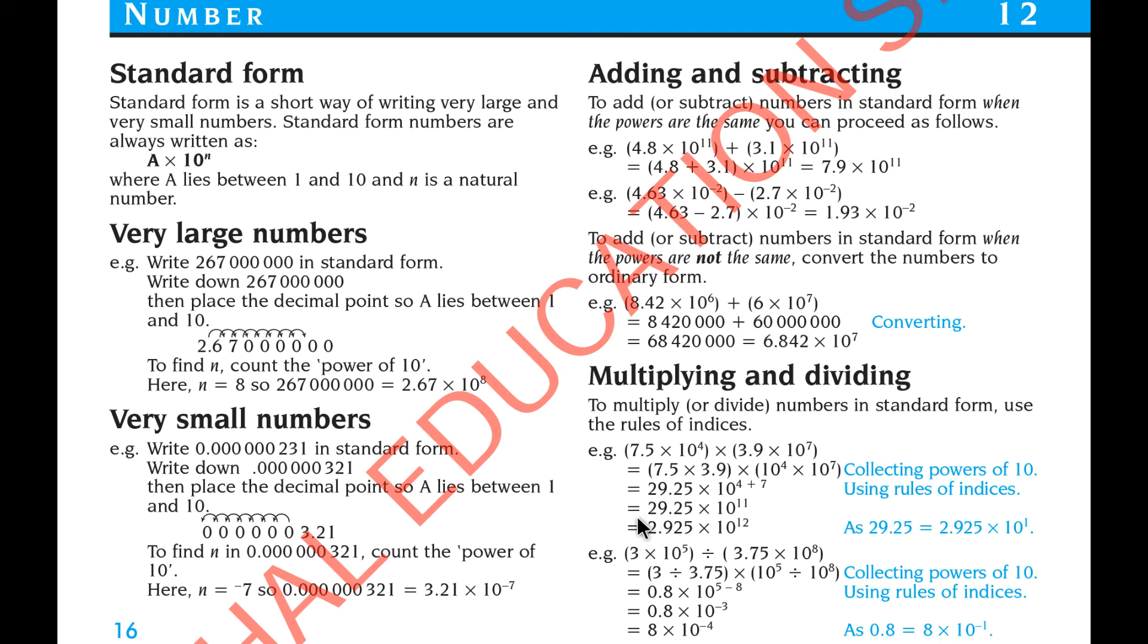Then write in the standard form. You need to always keep here one number before the decimal. Here you can keep much decimals as you want. So that's 2.925 times 10 to the power 12.